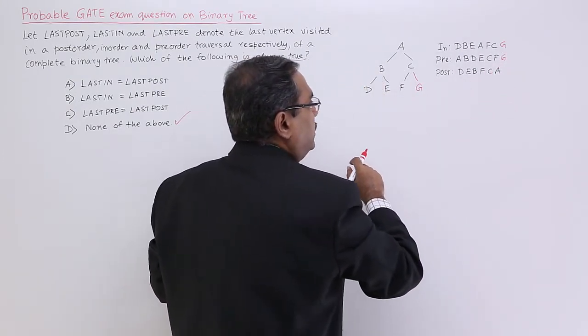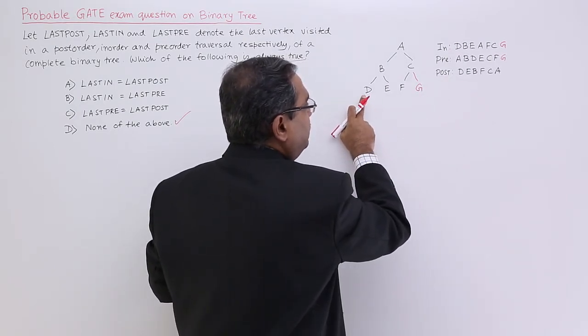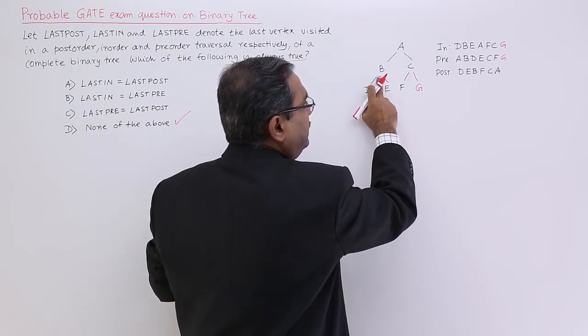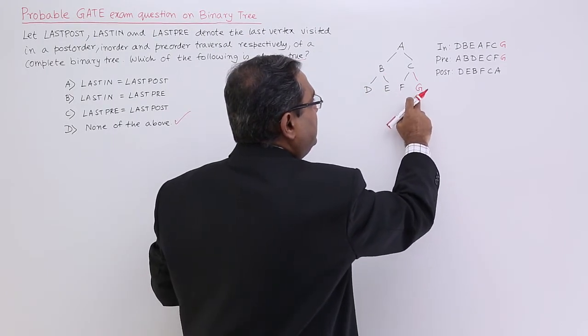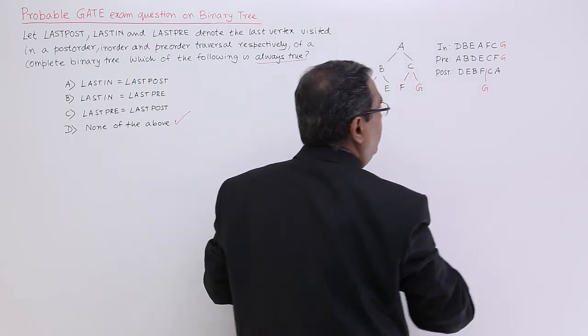In case of post-order, obviously, A will be the last. So, G will be coming before A. So, it will be coming like this post-order means D, E, B. So, F, G, C, A. Here will be G.